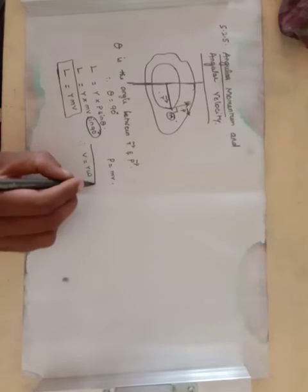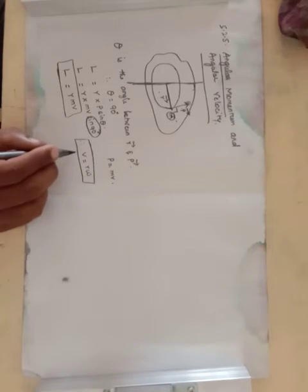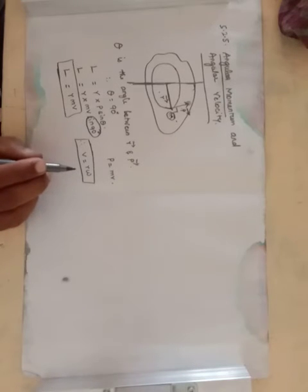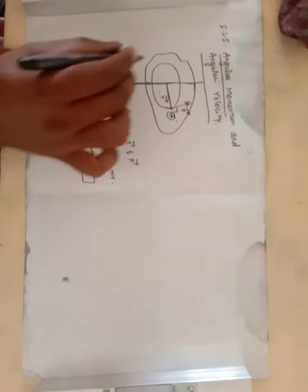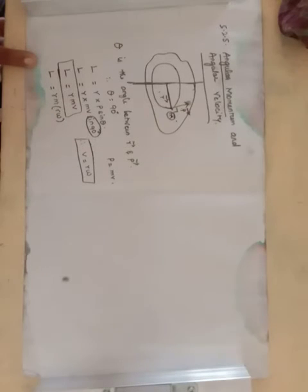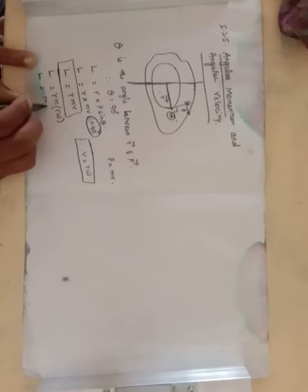The relationship between linear velocity and angular velocity is V = R × omega, which you studied in 10th standard. Substituting this into the angular momentum equation, we get L = R × m × R × omega, which gives L = m × R² × omega.